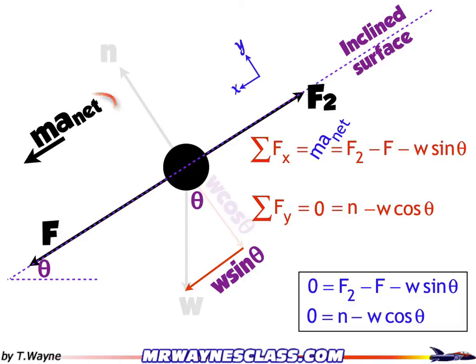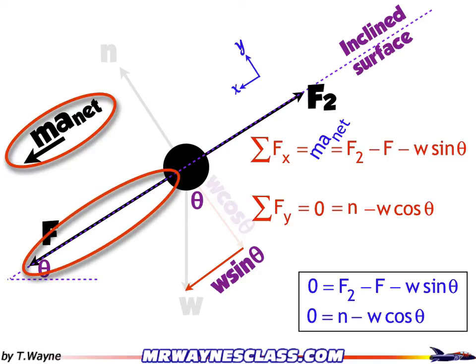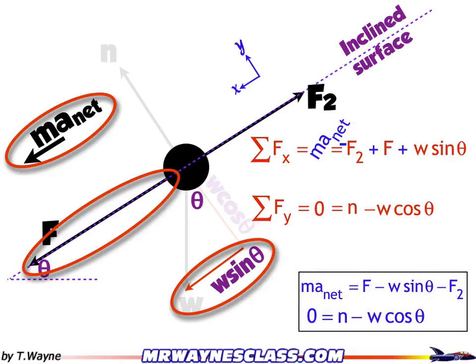Now, what else does this change? Well, ma_net is positive in my formula, and that means going down the incline is positive because ma_net points down the incline. Well, F also points down the incline, and so does w sine theta. So in my math expression, F is now positive, and w sine theta is now positive. And F2 goes the opposite direction, so it's going to be negative. That'll change my top equation to ma_net equals F plus w sine theta minus F2. The important takeaway is that ma_net determines the positive direction. Everything that matches ma_net is positive in the equation. Everything that goes the opposite direction is negative. I'm going to adjust my coordinate system so that it goes parallel to ma_net and perpendicular to ma_net whenever I have a net force.